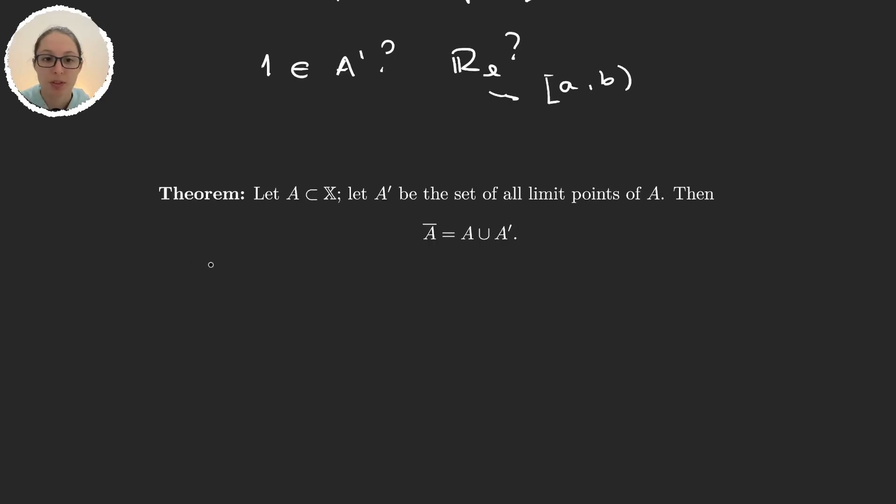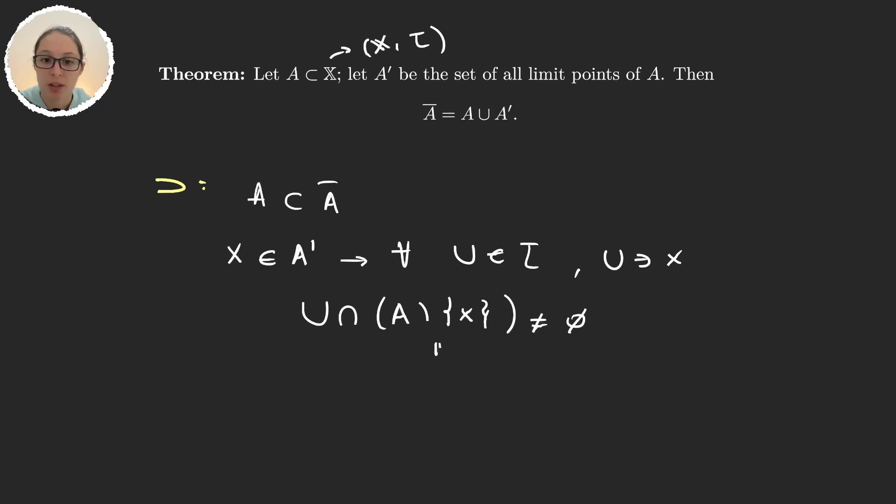We are going to do it by double inclusion. So first let's do this one. Obviously A was a subset of the closure of A, so we are not even going to consider this case. But what happens if x is in the set of the limit points? Well then we know that for every neighborhood of x, that is for every element U in the topology (so here we have to remember that X comes with a topology τ) that contains x, U ∩ (A \ {x}) is different from the empty set because it's a limit point. Well then in particular, U ∩ A is different from the empty set, and so because we have this for every neighborhood of x, then x is in the closure of A.